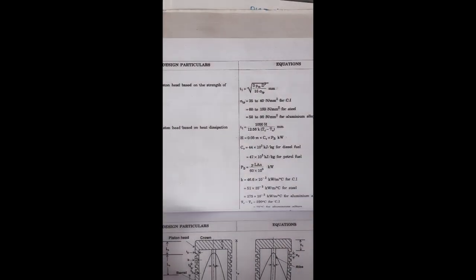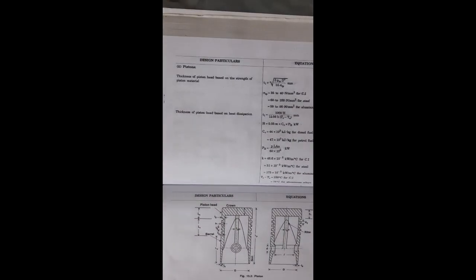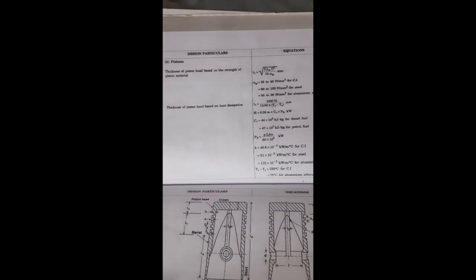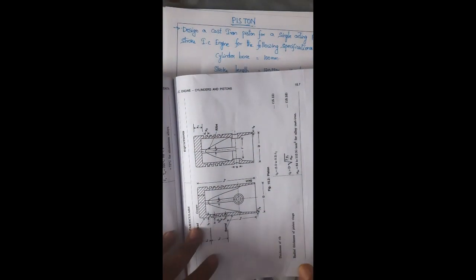For calculating the design procedure, we are going to use the data from page number 15.6 to 15.9. We will start our design procedure from the thickness of the piston head and end with the length of the piston pin. So let us start our problem.